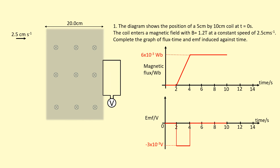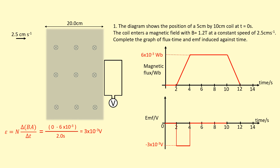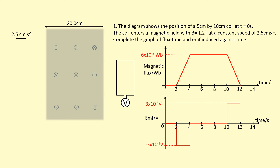Then the coil starts to leave and the flux is decreasing all the way to zero. According to Faraday's law there's going to be an EMF induced from the rate of change of flux — it decreases from 6×10⁻³ webers in two seconds — so it's the same magnitude of voltage but now it's positive. The EMF was previously induced to oppose the increase in flux; now it opposes the decrease in flux. Once the coil has left the field, the flux is zero and not changing, so the EMF goes back to zero.